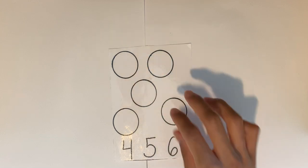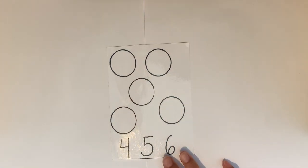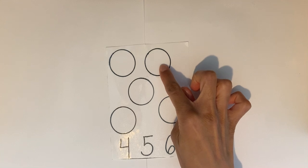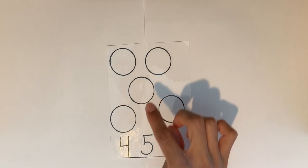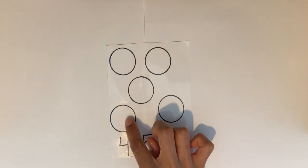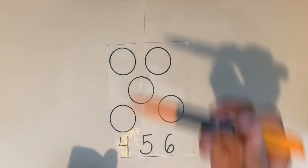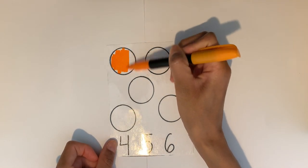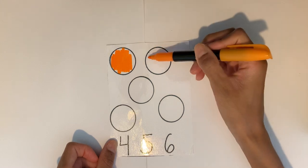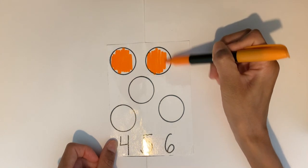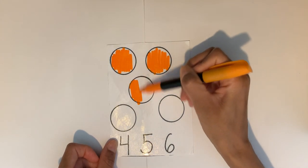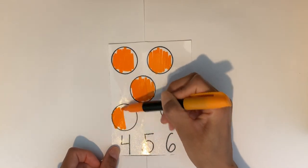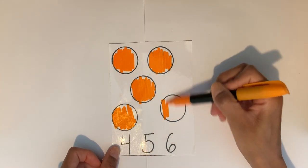Circle. One circle, two circles, three circles, four circles, five circles. Let's color them in. One circle, two circles, three circles, four circles, five circles.